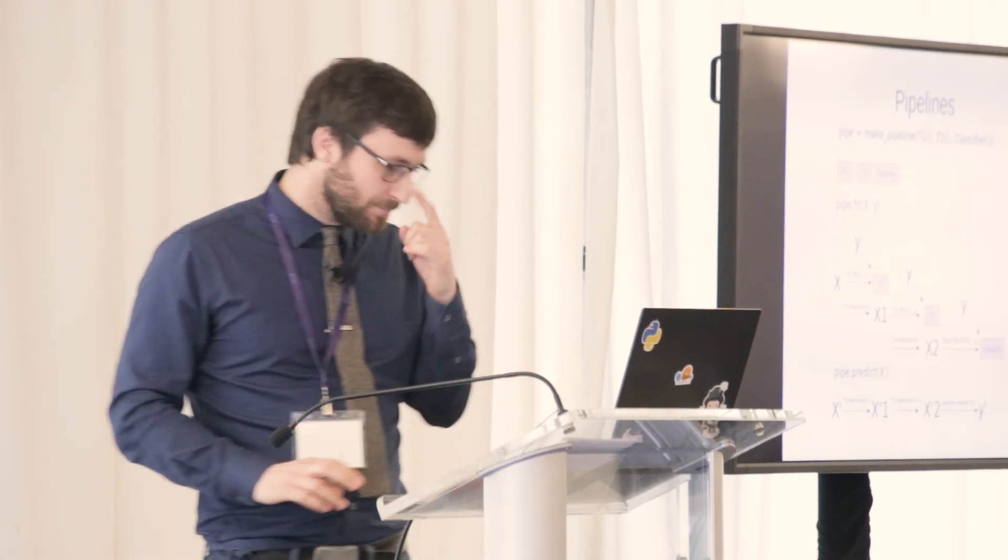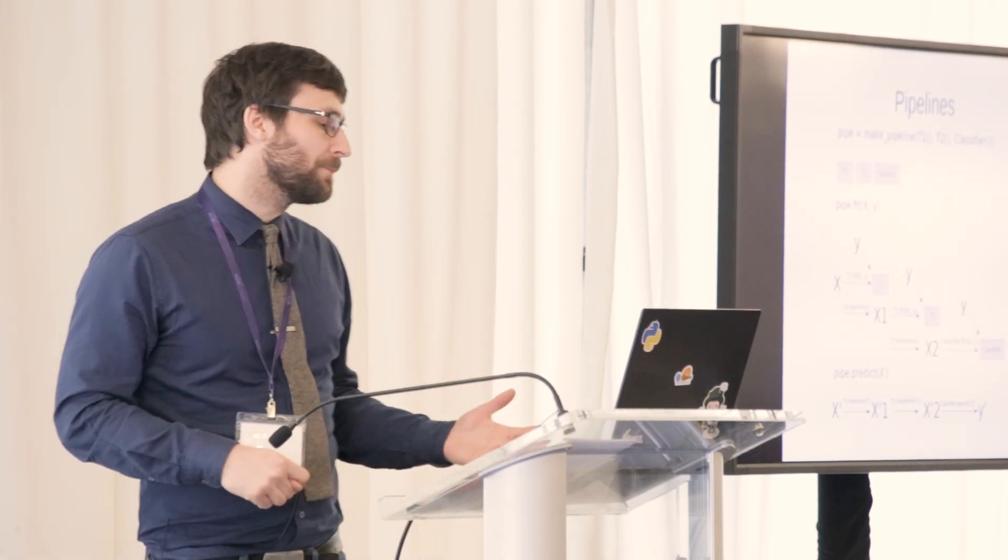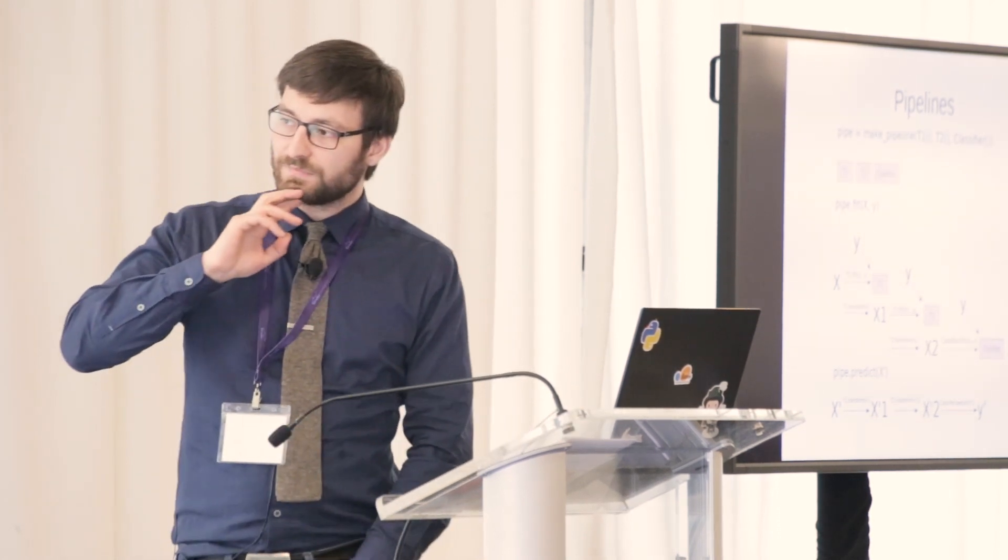And then if I call fit on this model, it'll fit the first transformation, transform using the first transformation, fit the second transformation, transform using the second transformation, then pass the transformed data onto the classifier. If I make prediction on new data, it'll do exactly the same transformations. It will not refit the transformations. It'll just transform the data and make sure the test data gets exactly the same treatment as the training data.